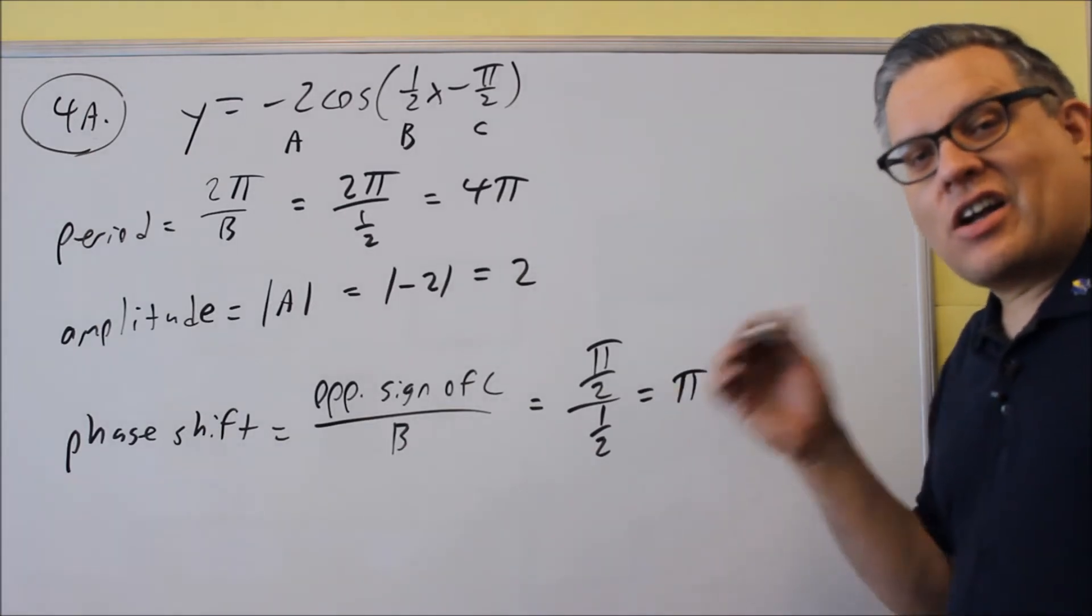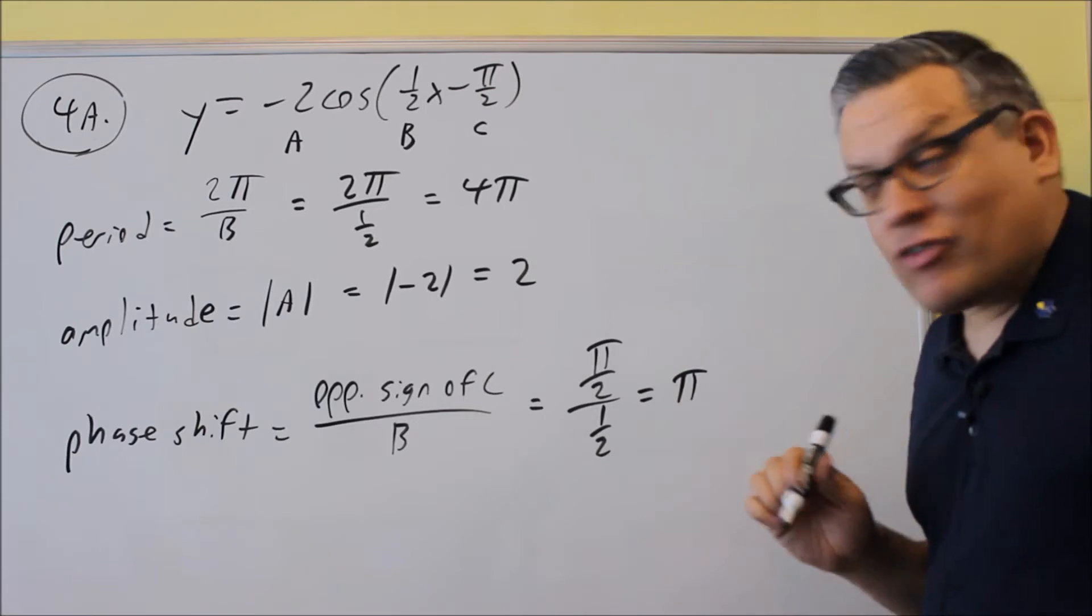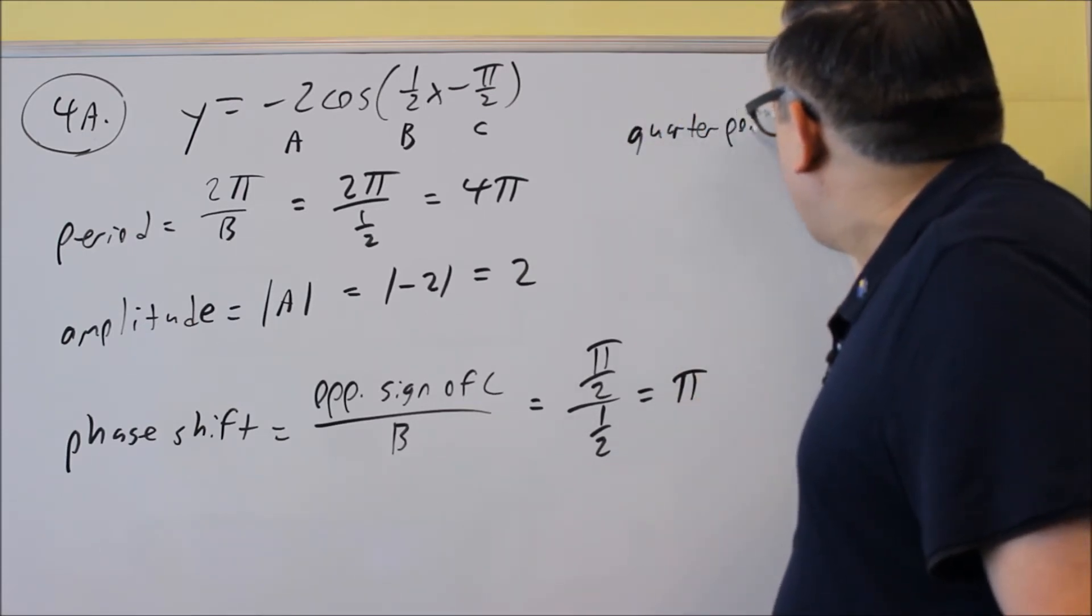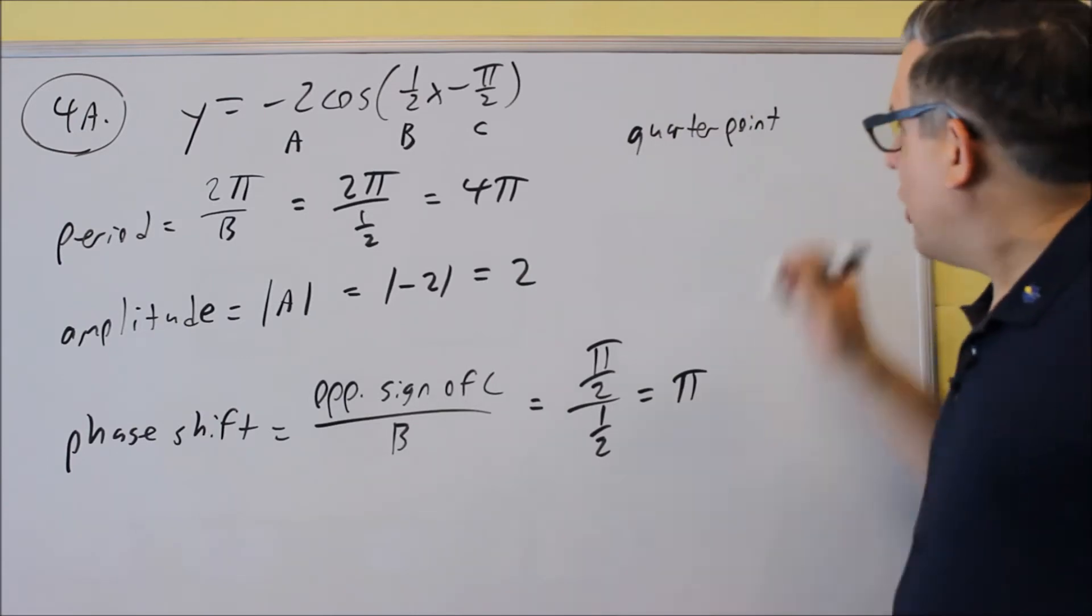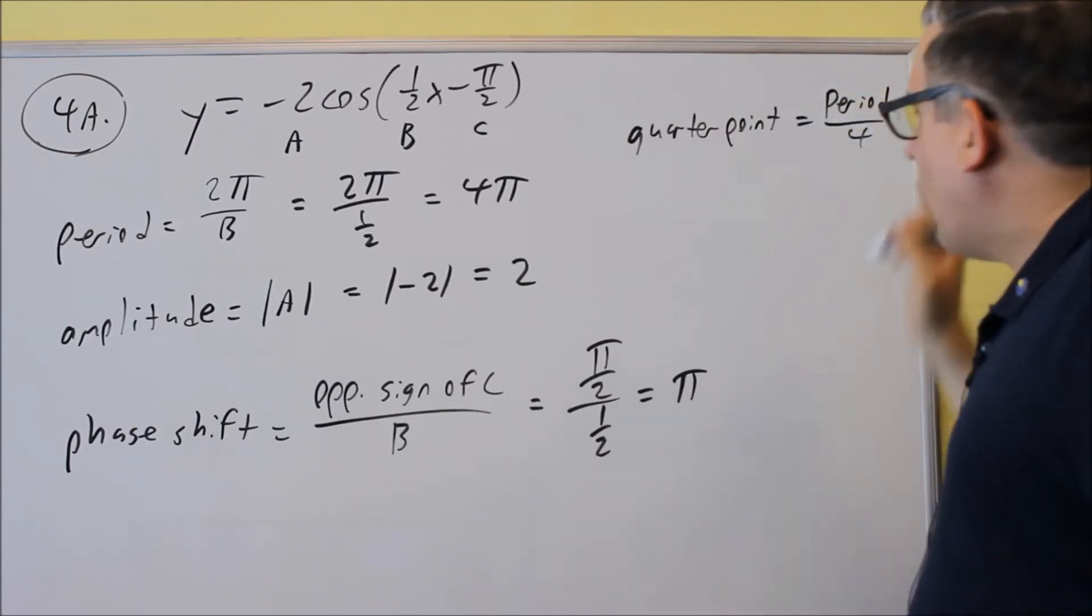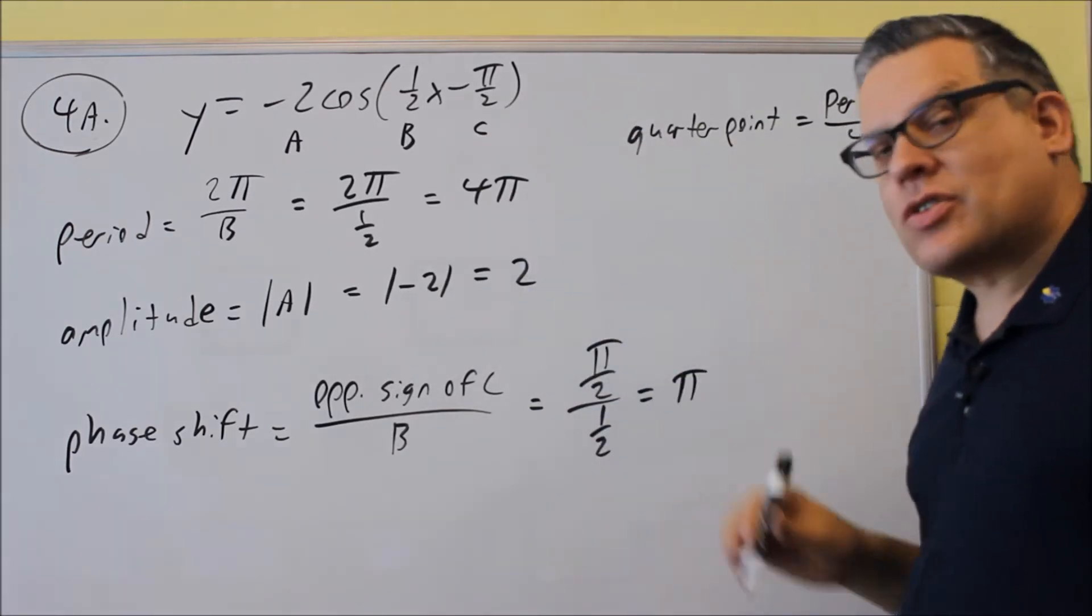Now, one more thing that's not going to ask you on a test, but it's important for you to know as far as graphing purposes, is what's referred to as the quarter point. Okay, so quarter point would be the period divided by 4, and it's whatever period you have on this particular problem, which in this case is going to be 4π.